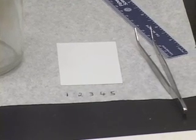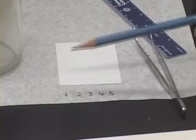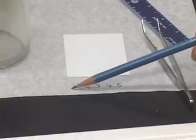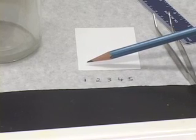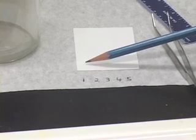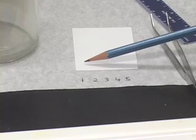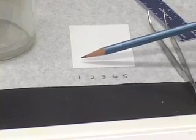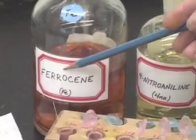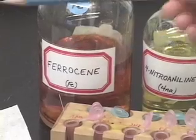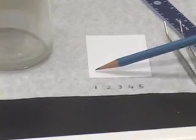What do I mean by that? At the spot labeled 1, I will spot one of the standards that was found in my unknown. For example, if I found that one of the spots in my unknown corresponded to ferrocene, then I will spot ferrocene here.